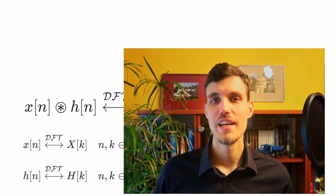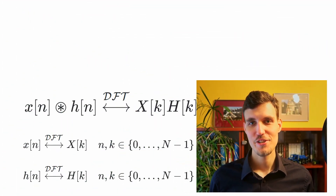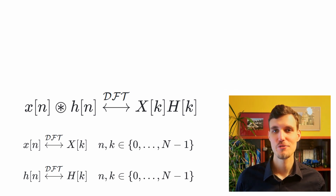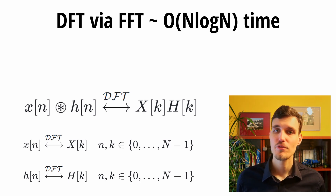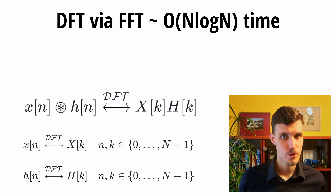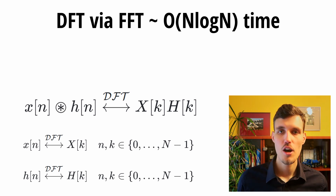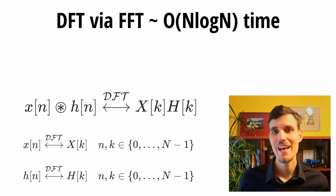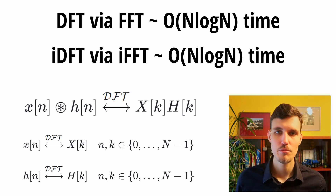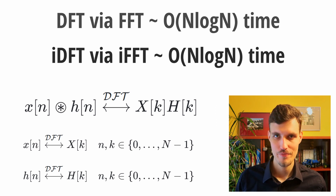Multiplication in the discrete Fourier transform domain is equivalent to the circular convolution in the time domain. What is more, the discrete Fourier transform can be computed in O(n log n) running time using the fast Fourier transform algorithm, and the inverse DFT can be computed via the IFFT algorithm.